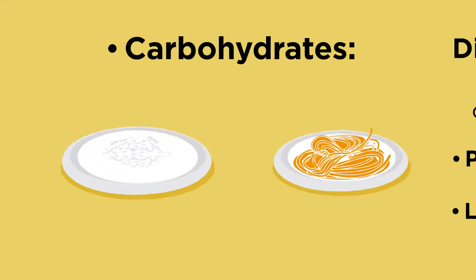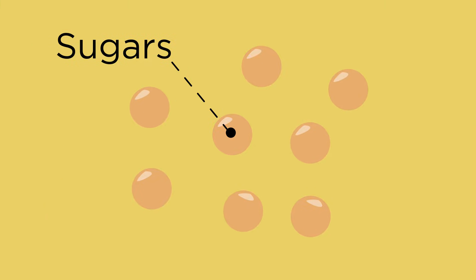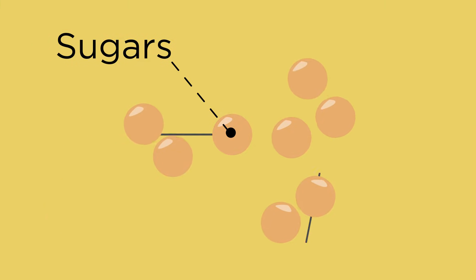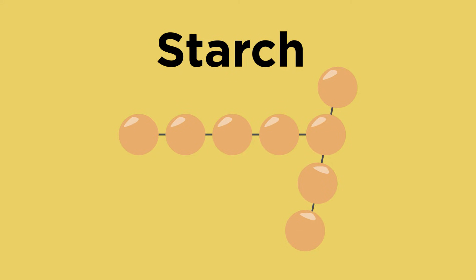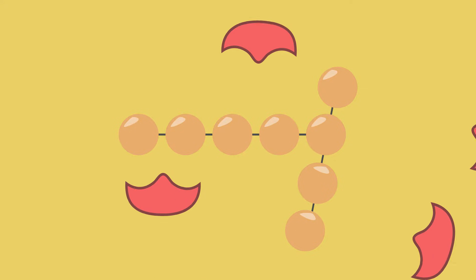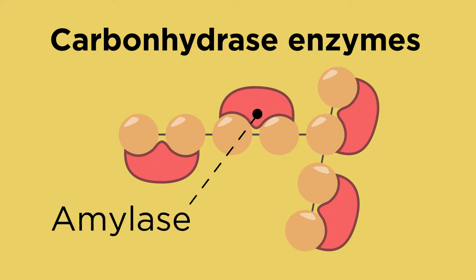First, carbohydrates. Foods like rice and pasta are made of carbohydrates. The simplest carbohydrates are sugars, which can be joined into big chains to make complex carbohydrates like starch. Carbohydrates are digested by carbohydrase enzymes, such as amylase.